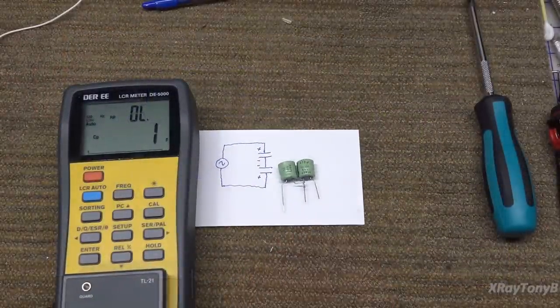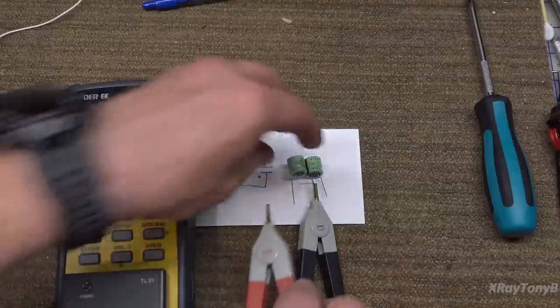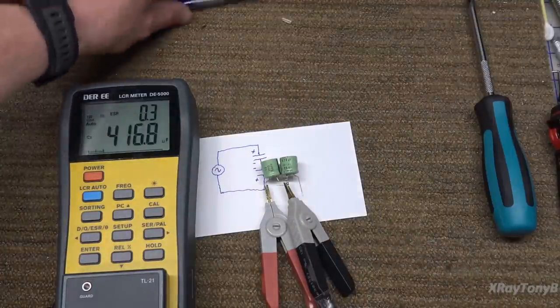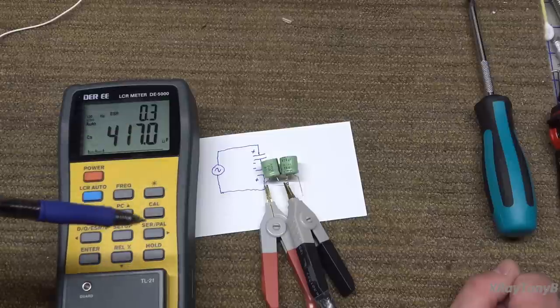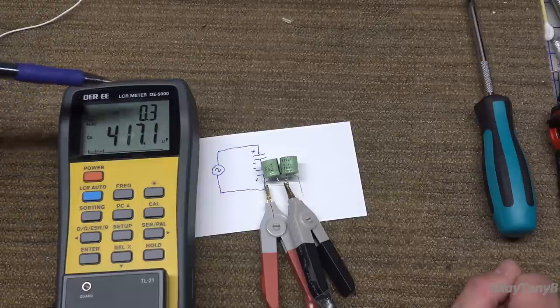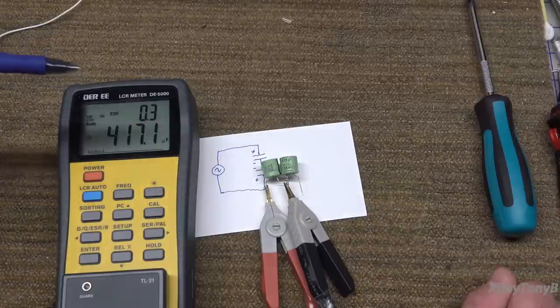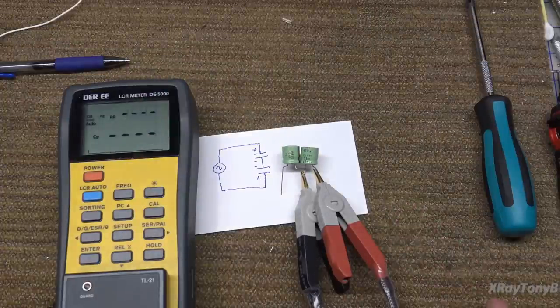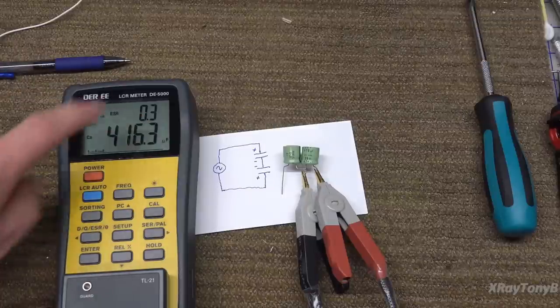I have the LCR analyzer on. Let's start by connecting it to just one of the capacitors. We can pick one randomly. You can see this is a 470 microfarad cap. These are very old capacitors, new old stock, been sitting in a bin for a long time. It's reading about 417 microfarads at 120 hertz, and the ESR is 0.3 ohms or 300 milliohms. If I measure the other capacitor, should be similar. It's about the same, 416 microfarads, and again 0.3 ESR.